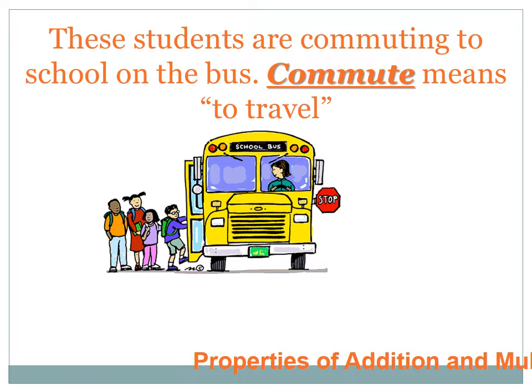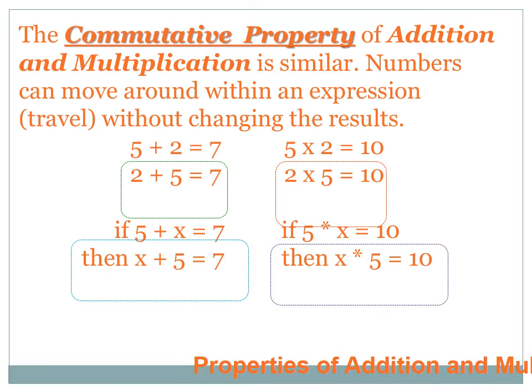You know the word commute. Some of you commute on a bus to get to school. Commute means to travel. In math, we have a commutative property. The commutative property says that numbers can move around within an expression — they can travel — without changing the results.